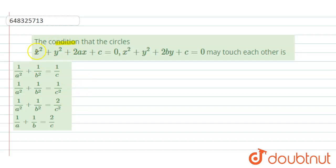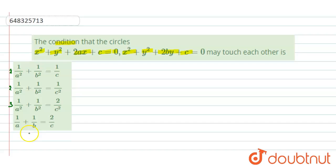Our question is: find the conditions that the circles x² + y² + 2ax + c = 0 and x² + y² + 2by + c = 0 may touch each other. The options given are: first, 1/a² + 1/b² = 1/c; second, 1/a² + 1/b² = 1/c²; third, 1/a² + 1/b² = 2/c²; and fourth, 1/a + 1/b = 2/c.